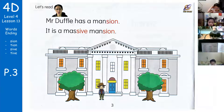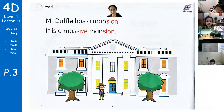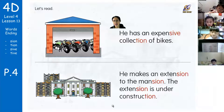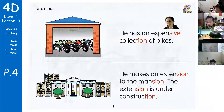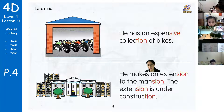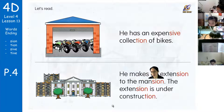Mr. Duffel has a mansion. It is a massive mansion. He has an expansive collection of bikes. He makes an extension to the mansion.